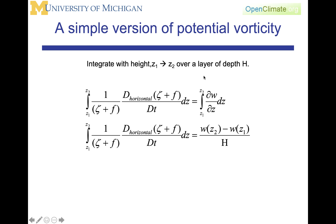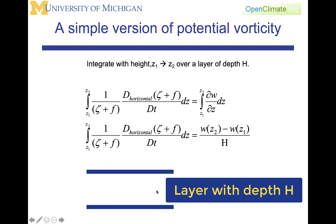We're going to integrate with height from z1 to z2 over a layer of depth h. Hence, we're going to have a layer in the atmosphere where there is a depth of h. That is what this equation is, showing the integral of both sides with respect to z, going from z1 to z2.